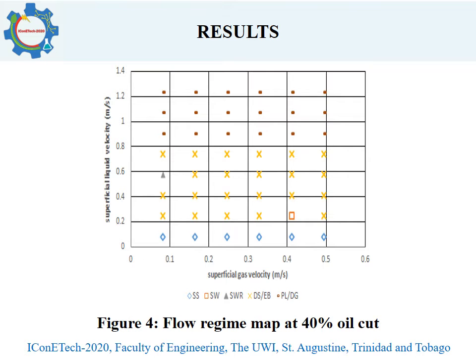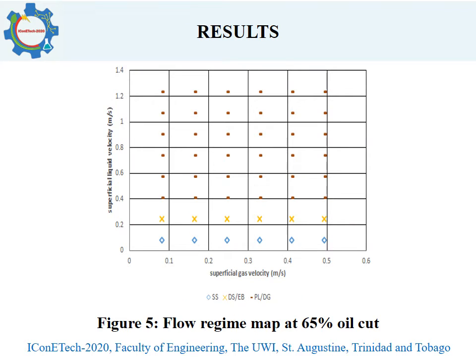Figures 4 and 5 show the flow pattern maps at 40% and 65% oil cuts respectively. The change of flow pattern at these oil cuts may be attributed to the increased effective liquid viscosity upon addition of oil. This increased viscosity is said to have dampened the flow instability. The applied flow instability — that is, the airflow — is not enough to allow the shear effects of the air to overcome the gravitational and viscous effects of the liquid. From 40% to 65% oil cuts, the elongated bubble region becomes narrower, giving up a bigger area of the plug flow pattern on the flow regime map.